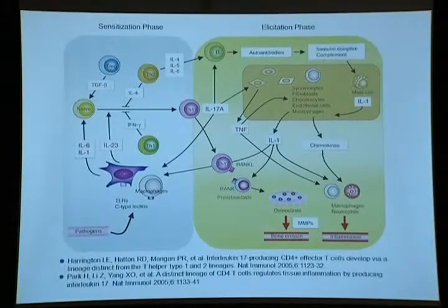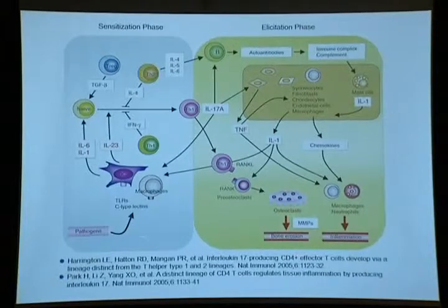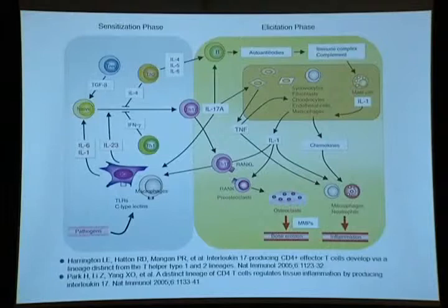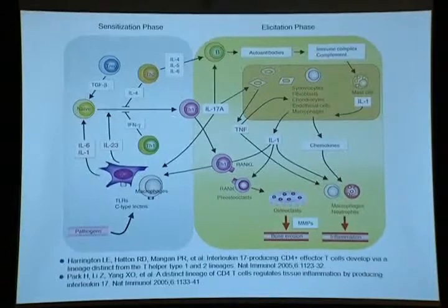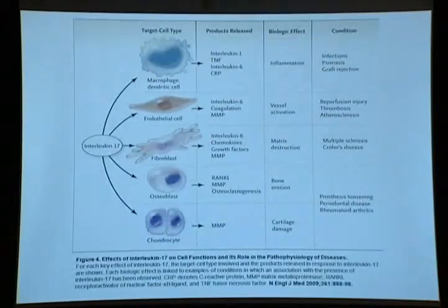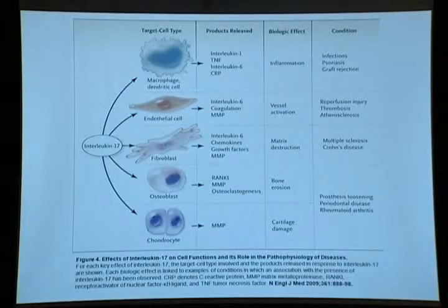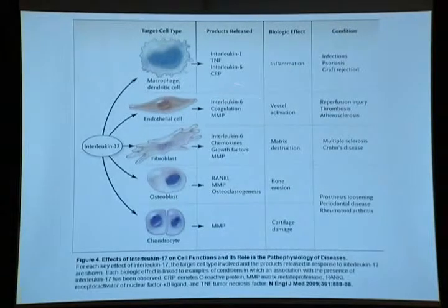In 2005, two very important papers were published in Nature Immunology describing IL-17-producing T helper cells — not TH-1 and not TH-2, but TH-17. This cell population can be primed by IL-23 and IL-1. IL-17 may affect all of the important cell types in rheumatoid arthritis, producing biological effects including synovial inflammation, matrix destruction, bone erosion, and cartilage damage.